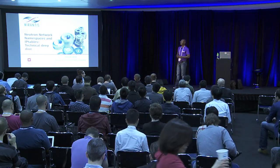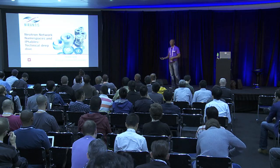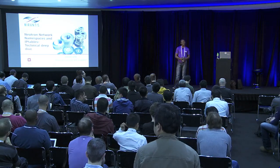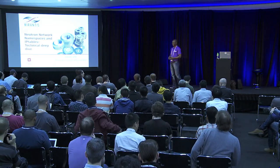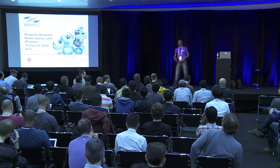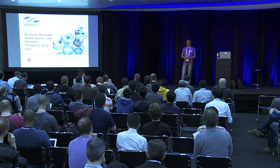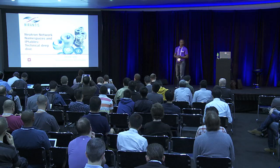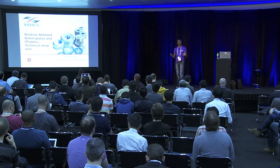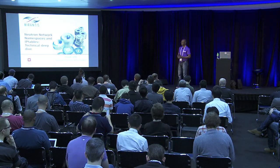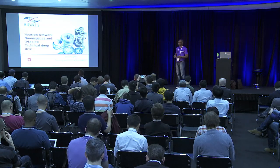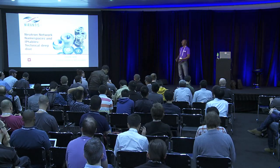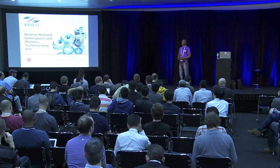Most of you here know Mirantis. What I'm going to be doing now is what I normally do on my job — every other week I get to explain OpenStack to people who come for training. Call me an OpenStack Evangelist. For today's talk: Neutron Network Namespaces and IP tables. It's going to be a technical deep dive on Neutron with emphasis on namespaces. You can't really do namespaces without Neutron, and you can't really talk about Neutron without namespaces.